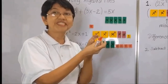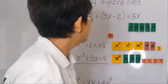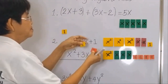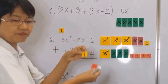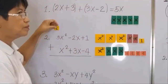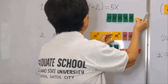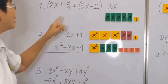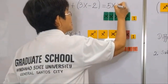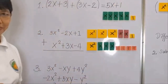So we set aside the zero pair, then another zero pair. So 1 minus 1 is 0. What is left? We have positive 1. So in effect, 3 minus 2 is equal to positive 1. The answer is 5x plus 1.